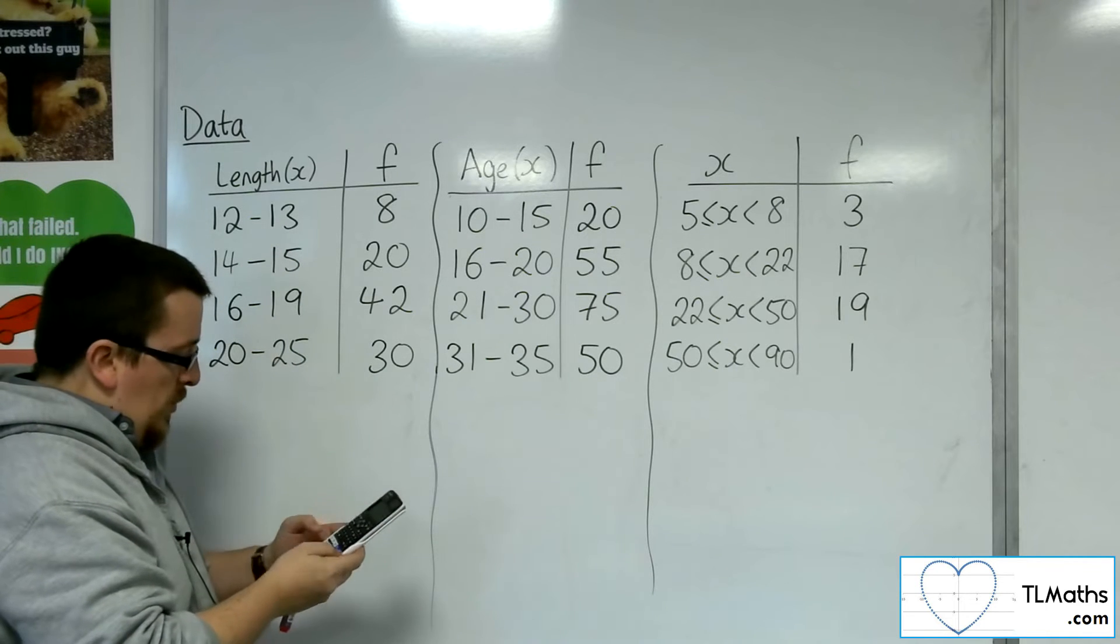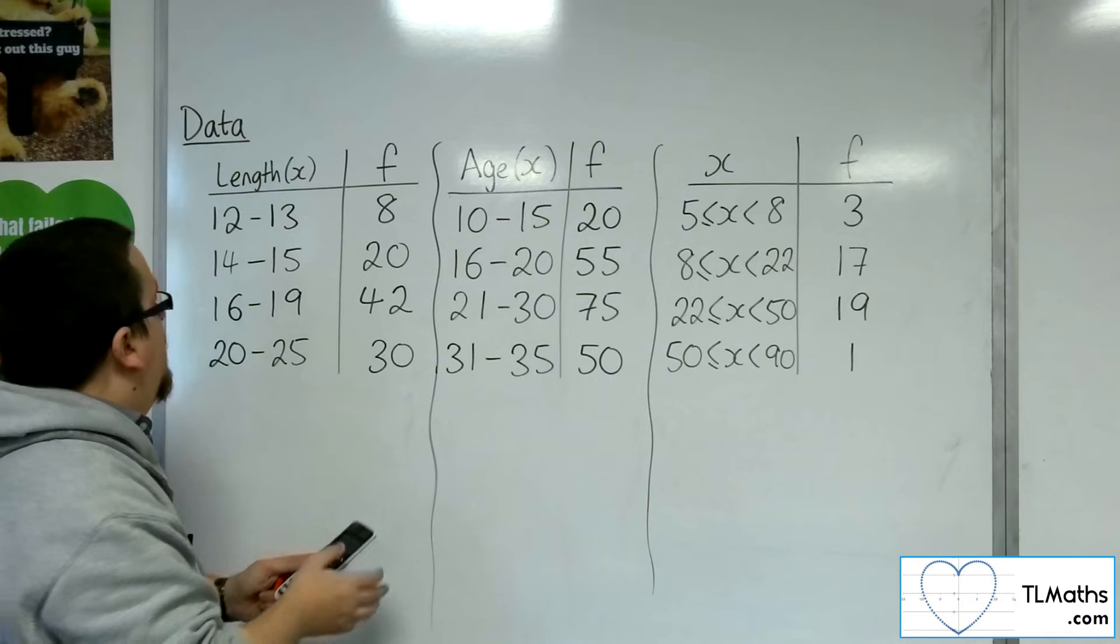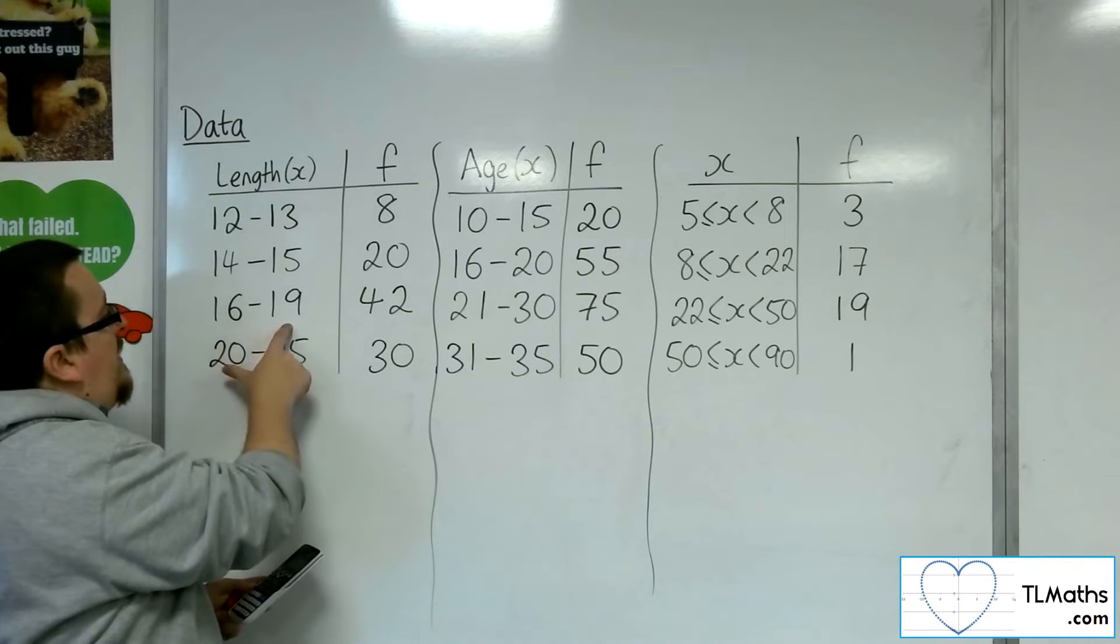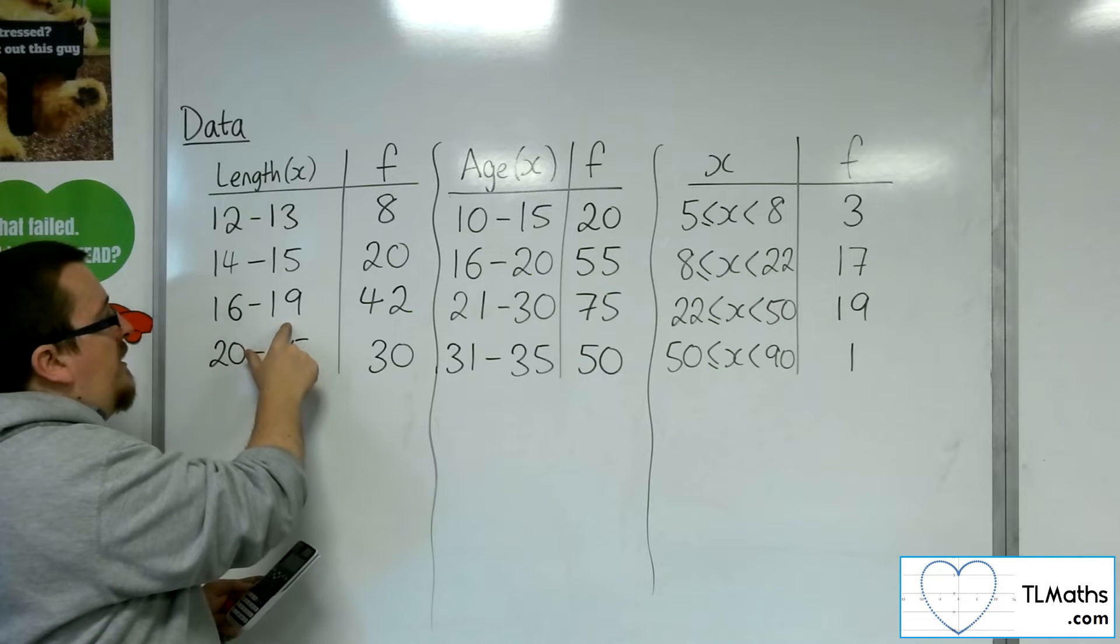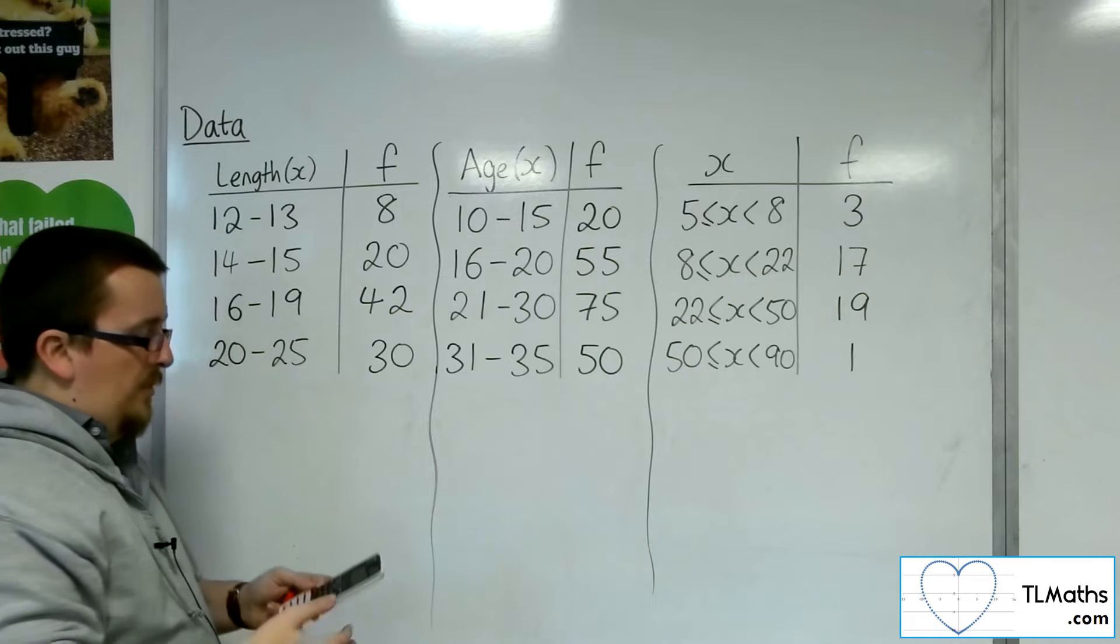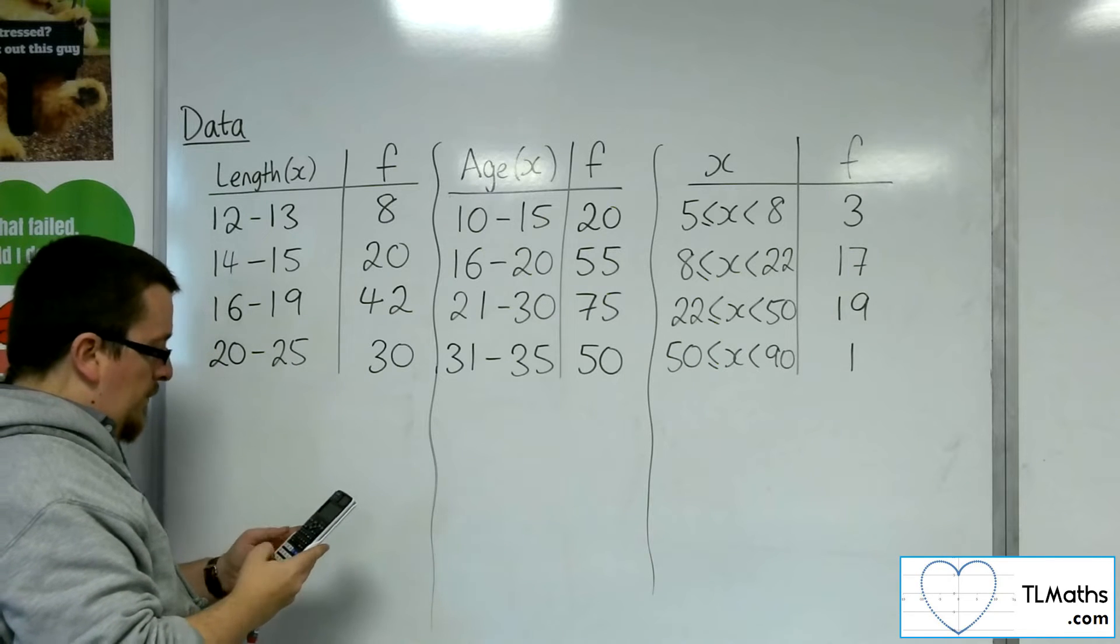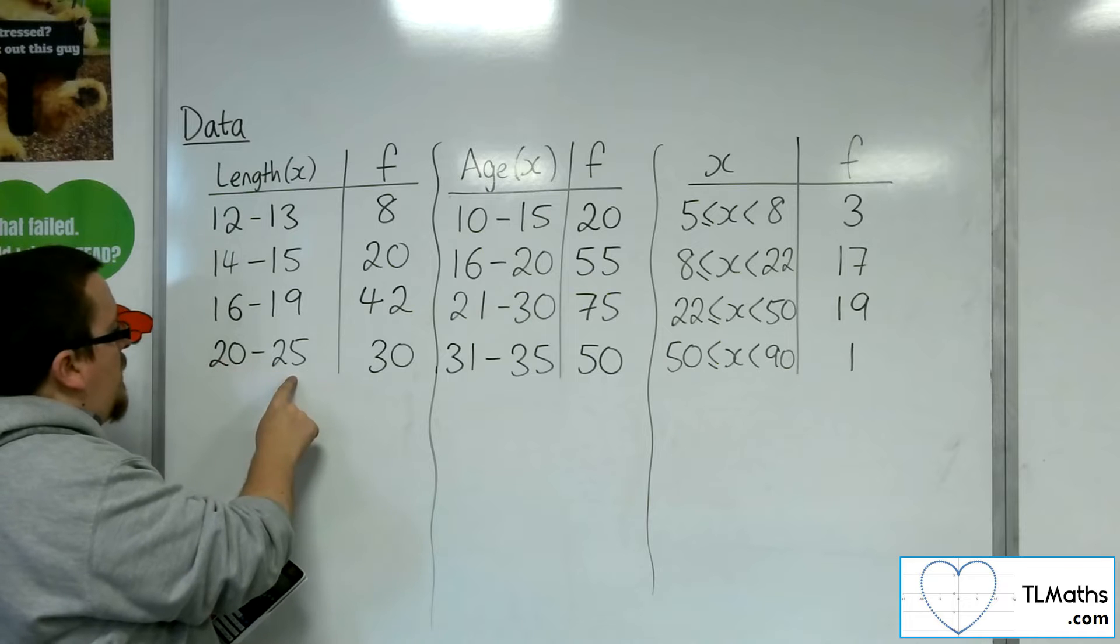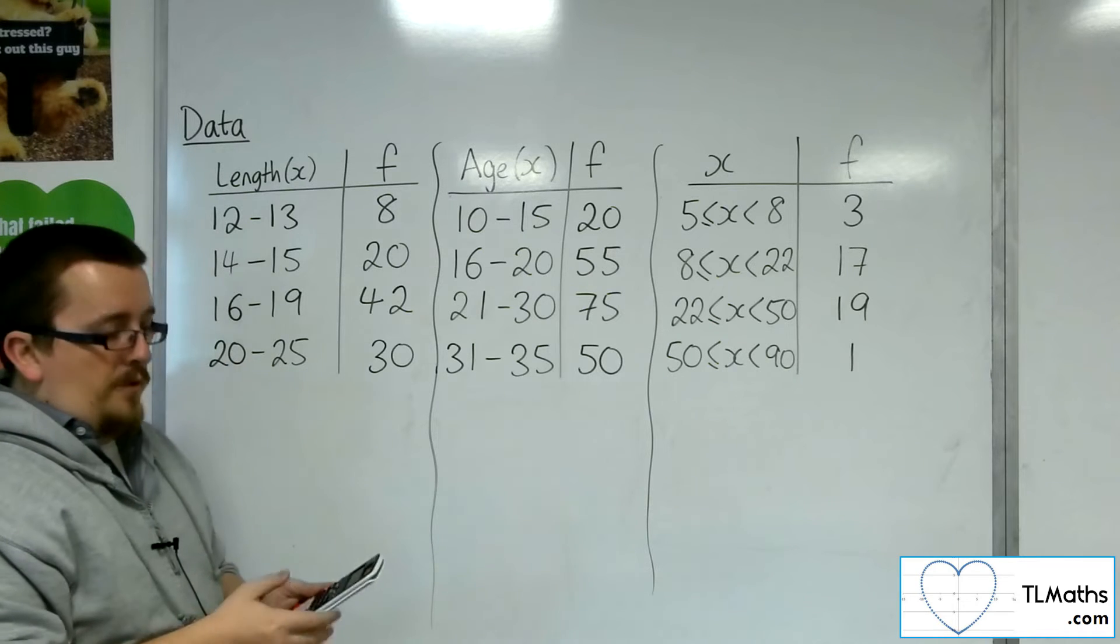We're going to put in the x values as the midpoints. So 12.5 for the first one. Then we've got 14 to 15, so 14.5. Then we've got 16 to 19. 16 plus 19 is 35, half of that is 17.5. Then we've got 20 to 25, and so that would be 22.5.